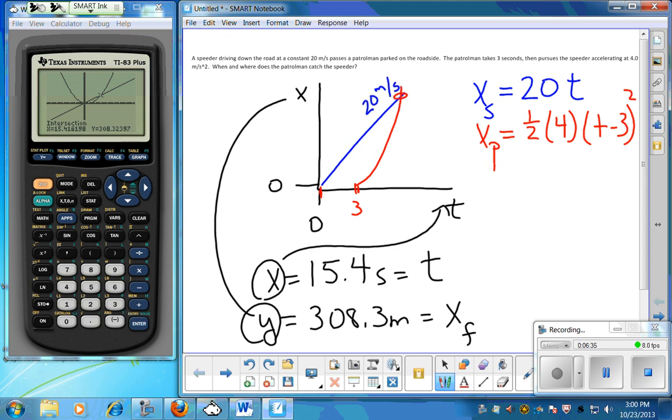So what's really nice about the graph is you don't have to worry about getting time and then plugging it back in. It'll give both of them to you at the same time. And the biggest problem people have is just sometimes they have trouble with the zooming and you really do need to have that intersection on your screen someplace for the calculator to find what it is.